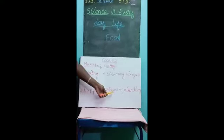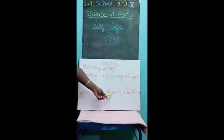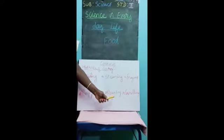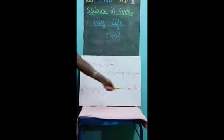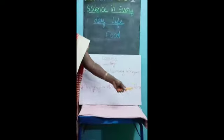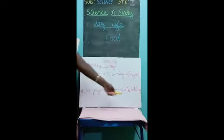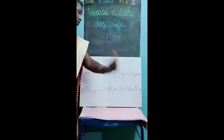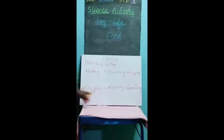Next one is roasting. You have to roast whatever things you want and then eat — that is called the roasting method. And grilling — today grilling is very famous, like chicken grill. That is also a method of cooking. These are the methods of the cooking process.